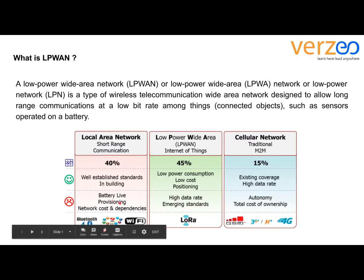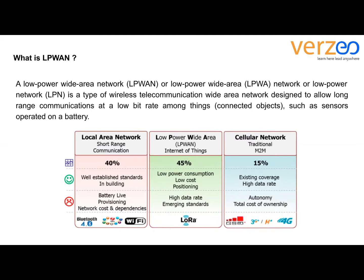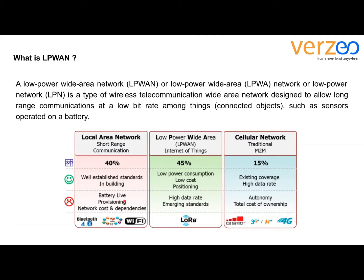In LAN, there are issues with battery life, provisioning, network cost, and dependencies. Battery life is an issue because you need to connect your switches, routers, or other devices to power all the time. You also need to provision resources so that each computer can get resources according to its needs.